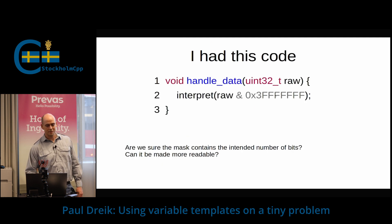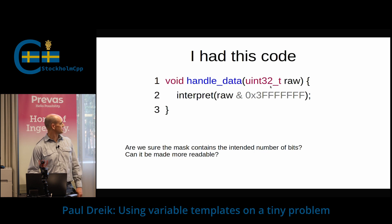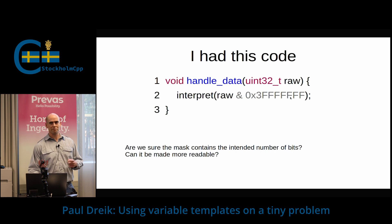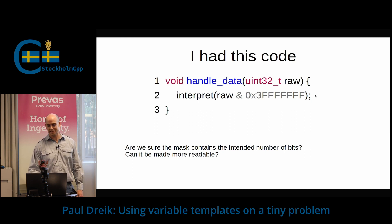So I had this code, and I got a 32-bit value read from some hardware register. We were supposed to peel off the 30 bottom bits and use it somehow. That's the interpret function. And when I saw this, I had a hard time reading the number of Fs here. Is it correct? I'm not sure. And it was repeated in several places. So I was thinking, could we do this better?